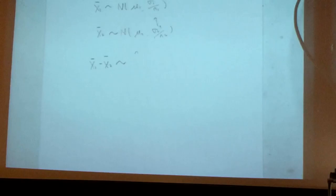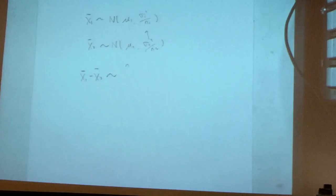So this difference now has become what? Another normal, okay, basically, the sum of the normal random variables has become the normal. So basically, this is, again, a normal distribution.